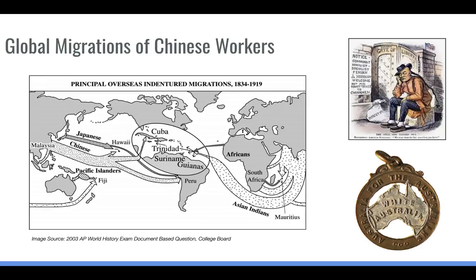Something that fits in time period five, under key concept 5.4, deals with global migration, which became much easier in this period. Chinese workers, especially in the late 1800s, left China in great numbers as a result of difficult economies and the Taiping Rebellion, which led to mass starvation. They went to find work elsewhere — in the Americas, the Caribbean, or in Southeast Asia.